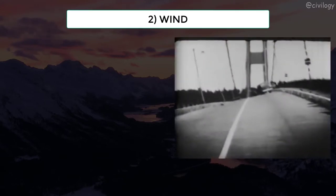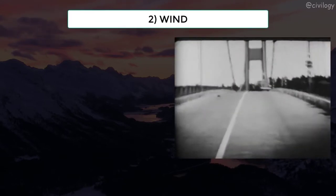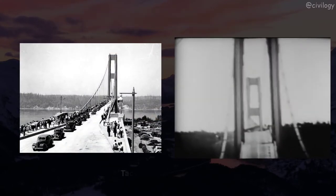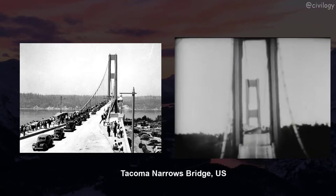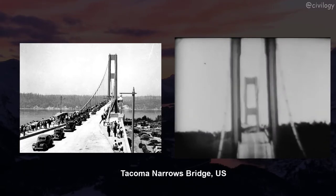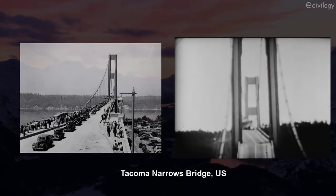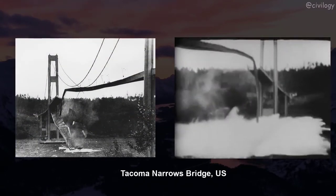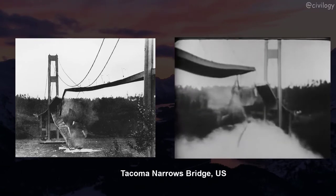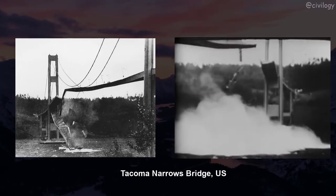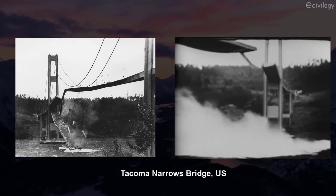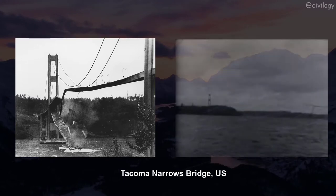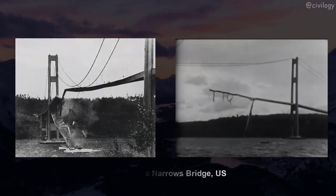Forces and vibrations induced by wind have led to a large number of failures. The Tacoma Narrows Bridge disaster is one of the best examples of a bridge collapse triggered by wind, occurring on November 7, 1940. Wind-induced aerostatic and aerodynamic forces are major design challenges, especially for flexible long-span bridges, where these forces lead to large displacements and stresses that may exceed the capacity of bridge structures, resulting in collapse.